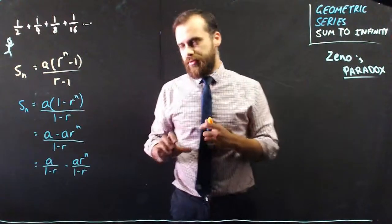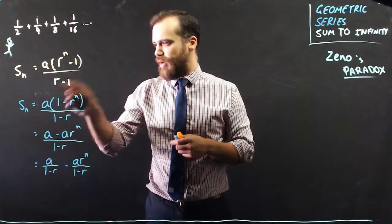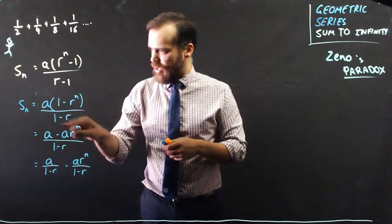So, here's the slightly different way. What I've done is, instead of writing a r to the n minus 1 over r minus 1, I've rewritten it this way.